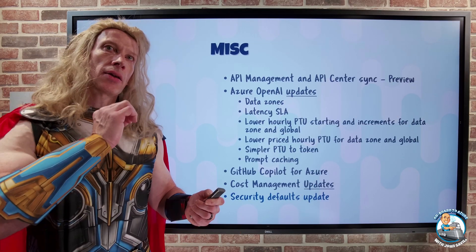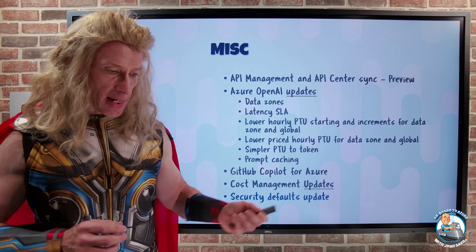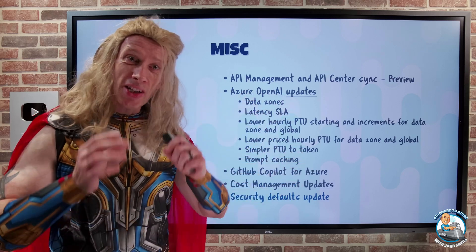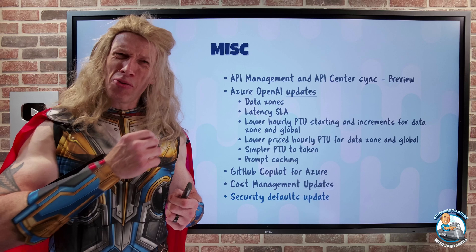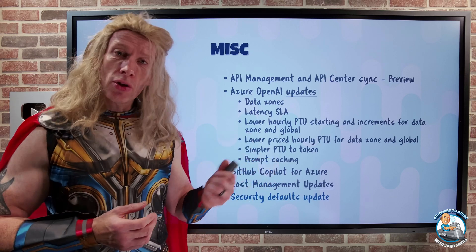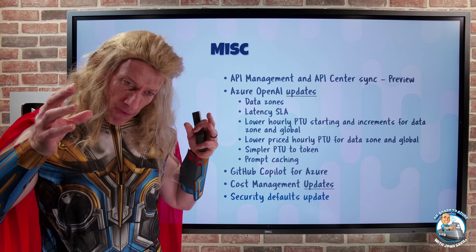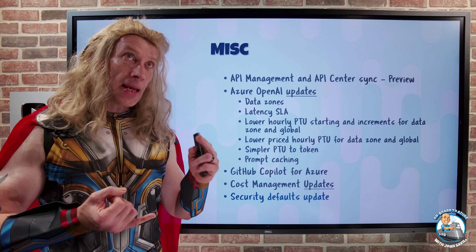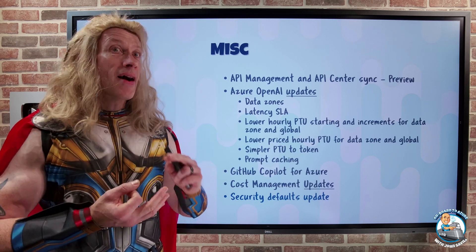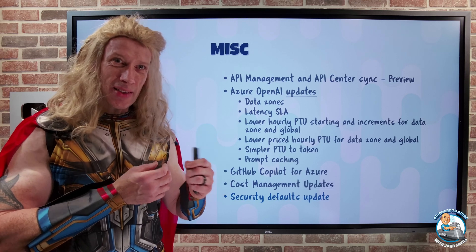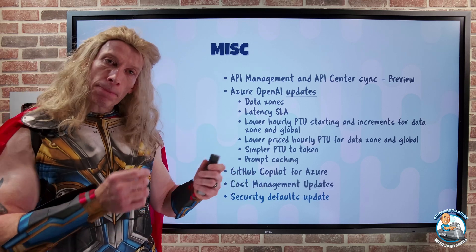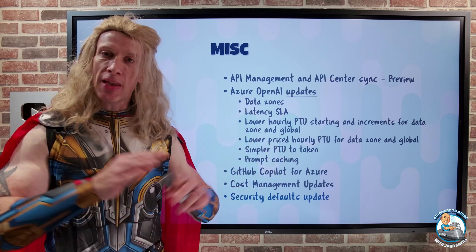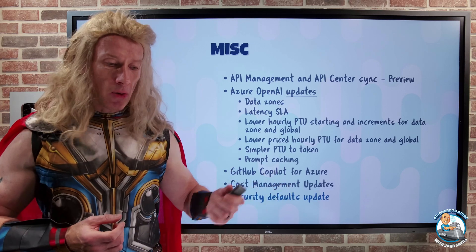The security defaults for Entra have been updated. For an organization that doesn't use conditional access — which requires a P1 or above license — or maybe you have it but don't know the right settings to start with, you can turn on security defaults, which puts in some very fundamental security configuration: users must set up MFA, legacy authentication is blocked, administrators have to use MFA, and MFA is required when interacting with privileged activities like the portal. Previously, those defaults let you delay MFA registration for 14 days — they're scrapping that. The first login, you'll have to go and set up MFA now.